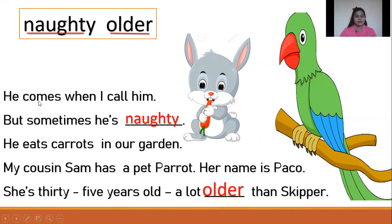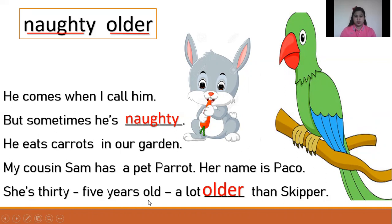Let us read again. He comes when I call him, but sometimes he is naughty. He eats carrots in our garden. My cousin's son has a pet parrot. Her name is Paco. She is 35 years old, a lot older than Keeper.